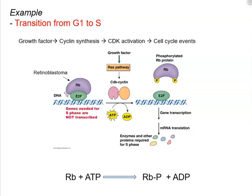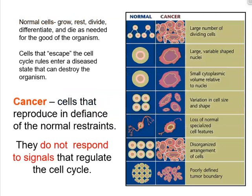Think about what would happen if the retinoblastoma protein were defective — say, with a mutation making it unable to bind to E2F. It could not act as an inhibitor of E2F, meaning the genes would be expressed constantly. The proteins that initiate S phase would always be present, and we would likely be looking at a cancerous cell that constantly divides.